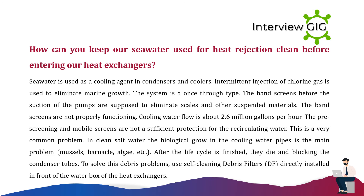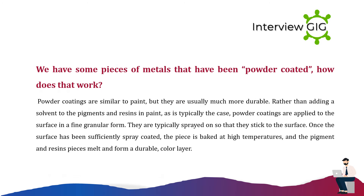How can you keep seawater used for heat rejection clean before entering heat exchangers? Seawater is used as a cooling agent in condensers and coolers. Intermittent injection of chlorine gas is used to eliminate marine growth. The system is a once-through type. Band screens before pump suction are supposed to eliminate scales and other suspended materials, but they are not always properly functioning. Cooling water flow is about 2.6 million gallons per hour. Biological growth in cooling water pipes — mussels, barnacles, algae — is the main problem; after their life cycle they die and block condenser tubes. To solve this, use self-cleaning debris filters (DF) directly installed in front of the water box of the heat exchangers.